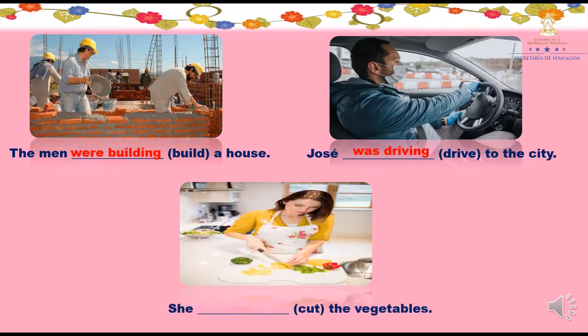And the last one: She ___ (cut) the vegetables. Si hablamos de ella, ¿cómo nos quedaría la respuesta? Was cutting. Was porque hablamos en singular. Y recuerden que los verbos que son de una sola sílaba terminan en vocal más consonante, tenemos que dobletear esa consonante y agregar -ing. Por lo tanto, she was cutting the vegetables. Ella estaba cortando los vegetales.